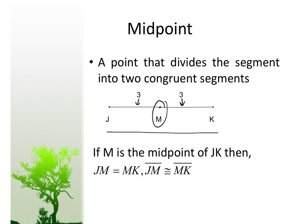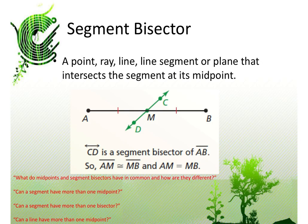If M is the midpoint of JK, then JM — from J to the middle — is the same as the distance from the middle to K. In other words, segment JM is congruent to segment MK.